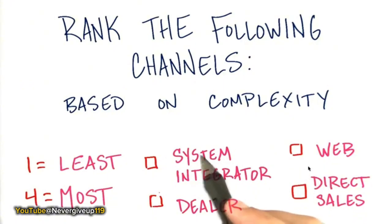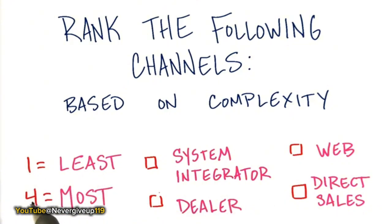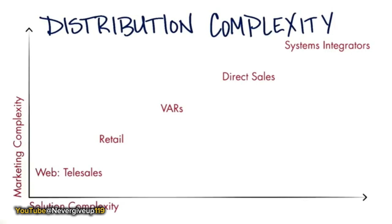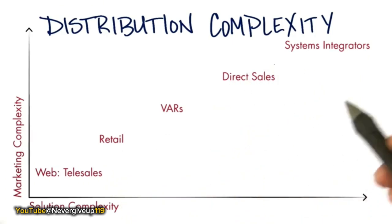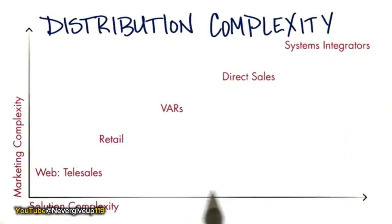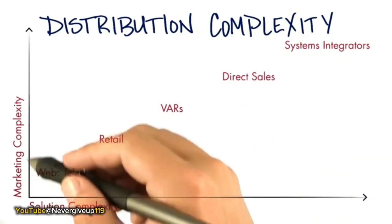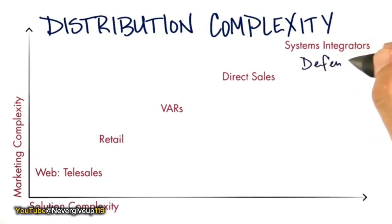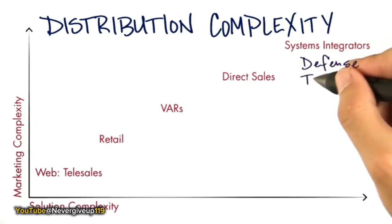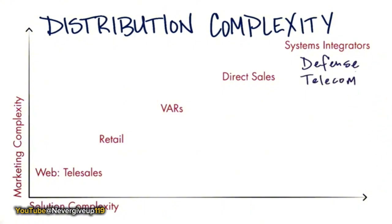Here are four examples of distribution channels: system integrator, dealer, web, and direct sales. Think about which channel can handle the most complexity and which can handle the least. System integrators are designed to handle complex systems. On the x-axis, we see increasing complexity of what each channel can actually handle, and on the y-axis, the sales and marketing complexity of each sale. System integrators are great for putting in defense systems or telecom systems that require hundreds or thousands of moving parts — software and hardware.